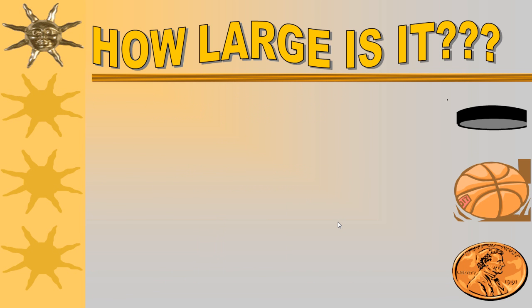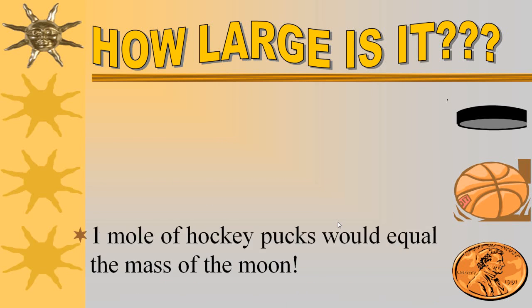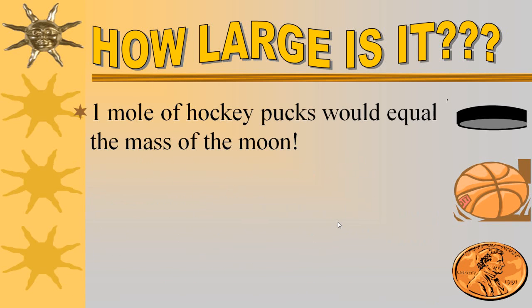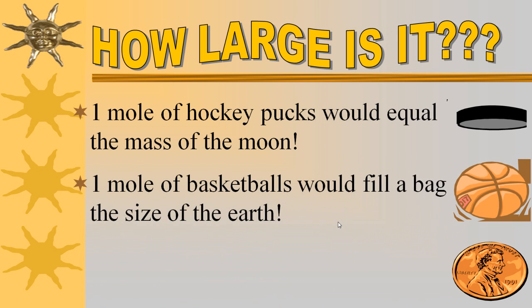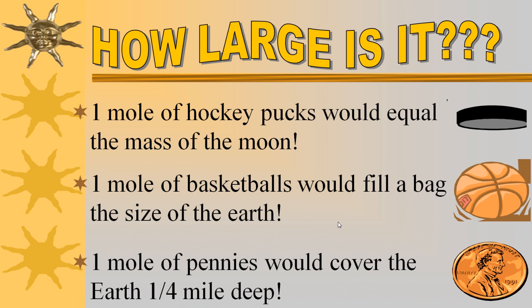All right, so that's a pretty big number, but how big is it really? Well, if we had a mole of hockey pucks, it would equal the mass of the moon. If we had a mole of basketballs, we could fill a bag of basketballs the size of the earth. If we had a mole of pennies, it would cover the earth one quarter mile deep. So you can see a mole is a very large number. But in chemistry, we're talking about very small things like atoms, so we need a very large number to quantify atoms.